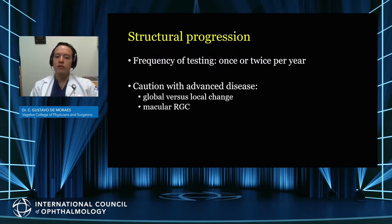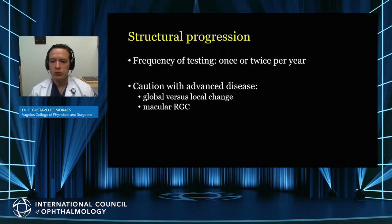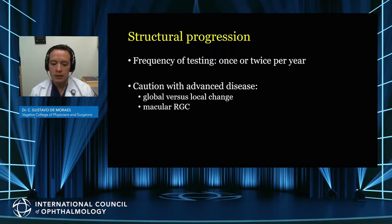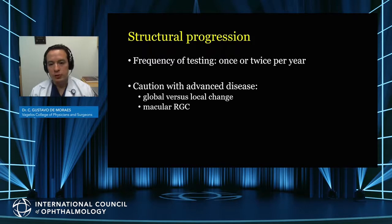Another question is how often OCT should be performed. The current recommendation is that there is not much benefit to doing it more than twice a year. For patients with low risk — normal discs, normal pressures, no significant risk factors aside from perhaps a family history of glaucoma — yearly testing may be sufficient. For patients with higher risk or established glaucoma, it's recommended to do two tests per year: the first and then every six months thereafter.